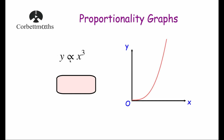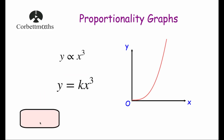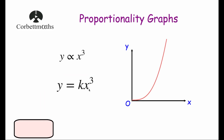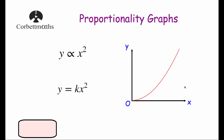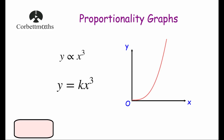Our next one is y is directly proportional to x cubed. Getting rid of the proportionality symbol gives us y equals k times x cubed. If we sketch this graph, it would be the right-hand side of a cubic graph — starting at the origin and curving up quite quickly. It's very similar to the x squared one, but just a bit steeper.